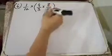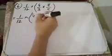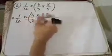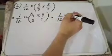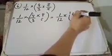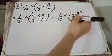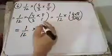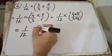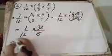इसके बाद question number 6 करूँगी: one by twelve multiply by four over three multiply by eight over five। इसका solution शुरू करते हैं — one over twelve, फिर four multiply by eight over three multiply by five। Numerator में 4 और 8 हैं, denominator में 5 और 3 हैं। Simplify करते हुए: one over twelve multiply by thirty two over fifteen।